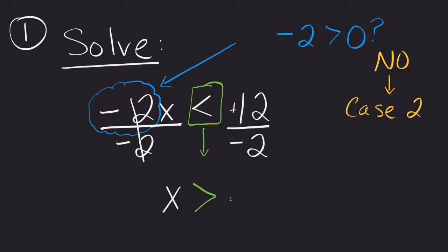So positive divided by negative will be negative. And 12 divided by 2, which would be 6. So my answer is really x is greater than negative 6. So be careful with that negative. Let's try another one so you can see how this works.